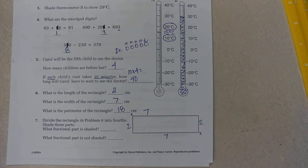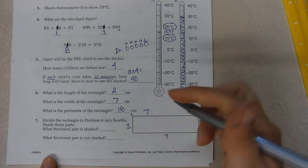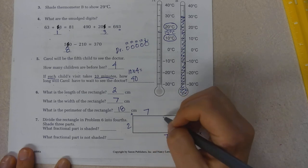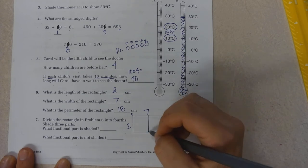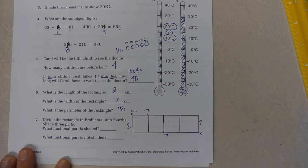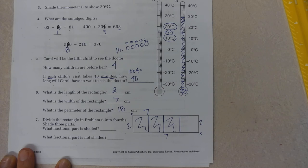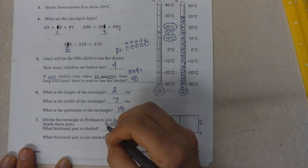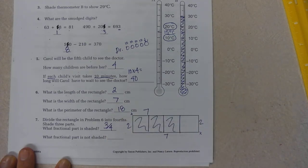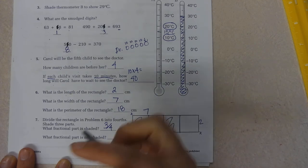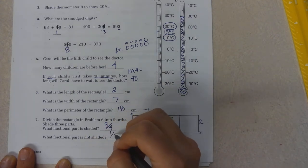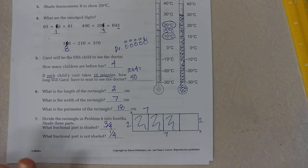Divide the rectangle in problem 6 into fourths. I've made fourths. Shade 3 parts. 1, 2, 3. What fractional part is shaded? Well, 3 out of a total of 4. What fractional part is not shaded? 1 out of 4.